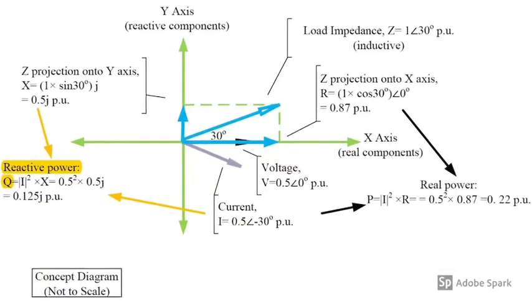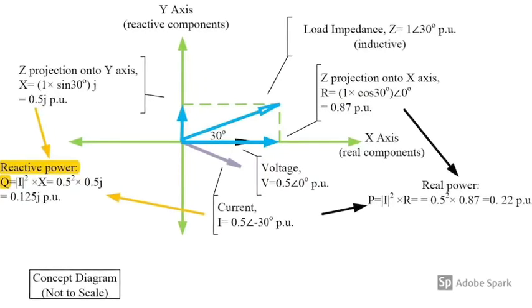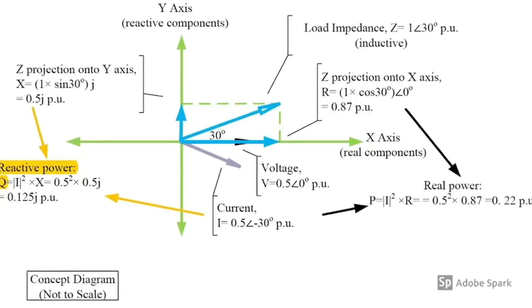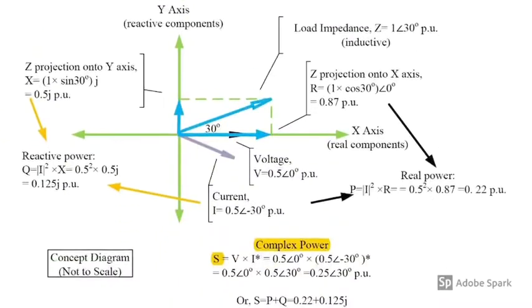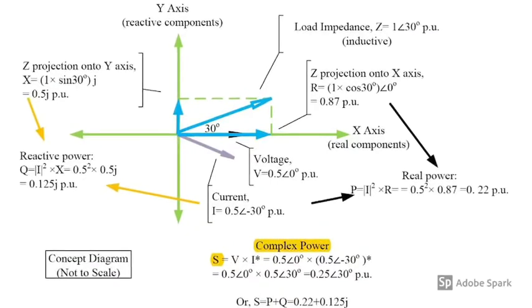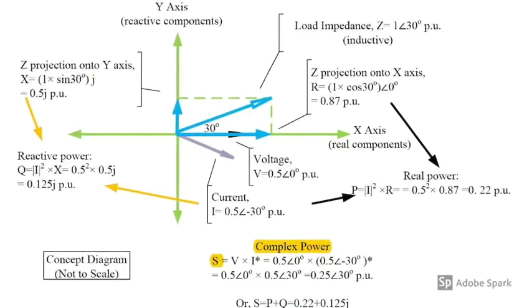For reactive power, Q is current magnitude squared times reactance. Complex power S is equal to voltage times current conjugate.